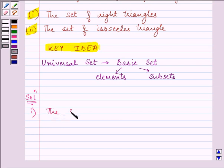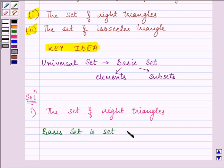The set of right triangles. The basic set of the given set is the set of all triangles. So our basic set is set of all triangles. Now also the basic set can be set of triangles which have one angle greater than or equal to 90 degrees.